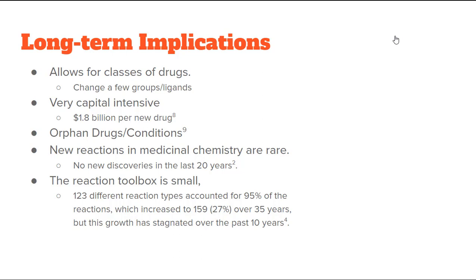The development of a drug is very capital intensive — roughly $1.8 billion per new drug. An interesting area is orphan drugs and conditions: these are drugs for very rare diseases, and from a business perspective it's not cost-effective to develop them, which is one reason those drugs are particularly expensive. In many countries, governments actually subsidize the development of orphan drugs for rare conditions. New reactions in medicinal chemistry are also rare — there have been no new discoveries in the last 20 years. The reaction toolbox is relatively small: 123 different reaction types account for 95% of reactions, which grew to 159 over 35 years, but this growth has stagnated over the past 10 years.